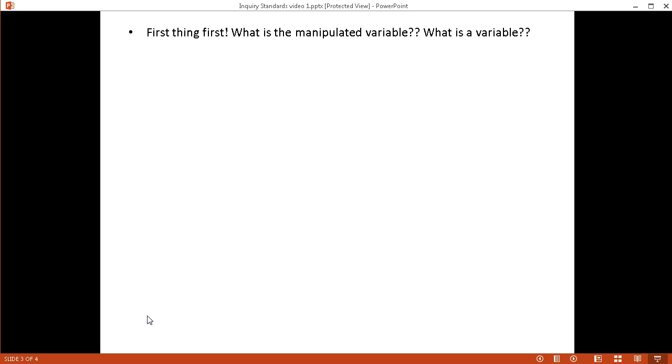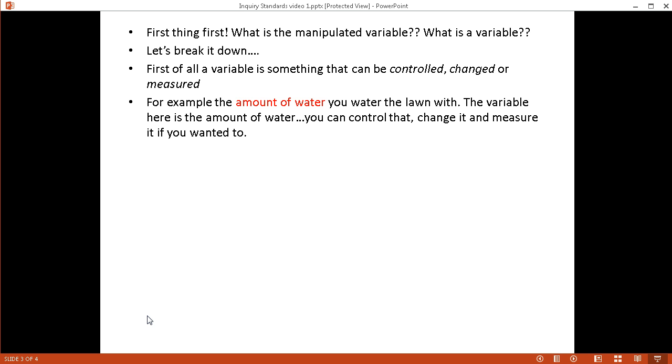First things first, let's figure out our variables. This word, manipulated variable, and just the word variable, let's figure out what it all means. Let's break it down here. A variable is something that can be controlled, it can be changed, or it can be measured. Just like in your math class, you hear the word variable. If you've got a formula and you're solving for x, or you're solving for y, that's a variable. A variable in math. But in here, for science, a variable is something that we're controlling, changing, or measuring.